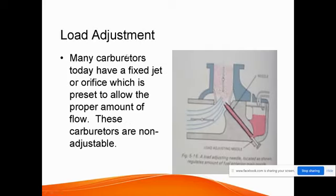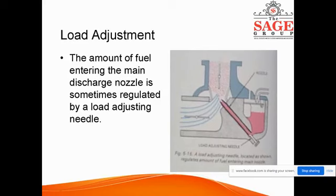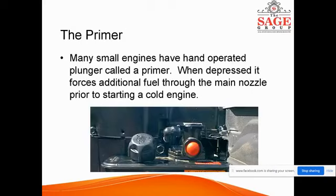Load adjustment: many carburetors use a fixed jet preset to allow the proper amount of fuel — these carburetors are not adjustable, though adjustment can be done via various nozzles. Many small engines also have a hand-operated device called a primer. When depressed, it forces additional fuel through the main nozzle prior to starting a cold engine, which helps address cold-start problems.